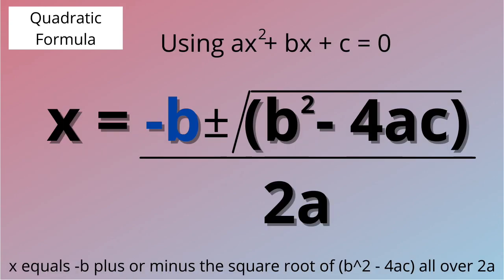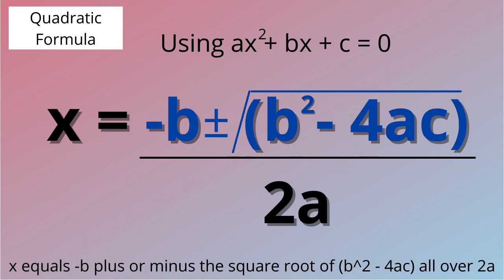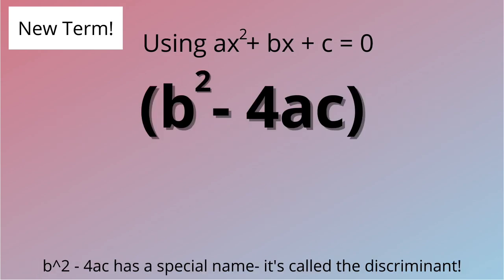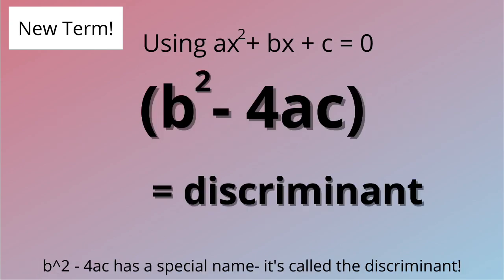x equals negative b plus or minus the square root of b squared minus 4ac. b squared minus 4ac has a special name. It's called the discriminant.